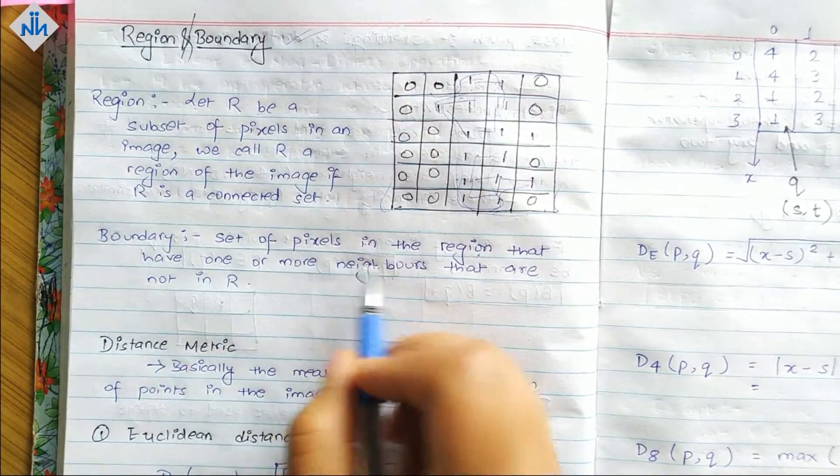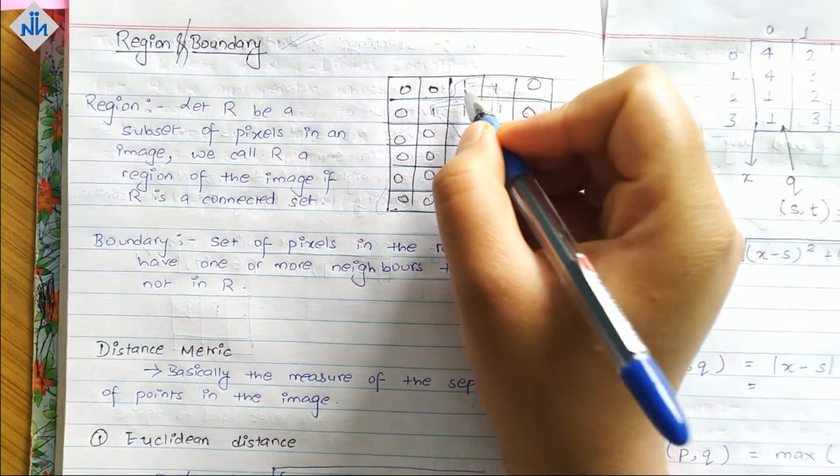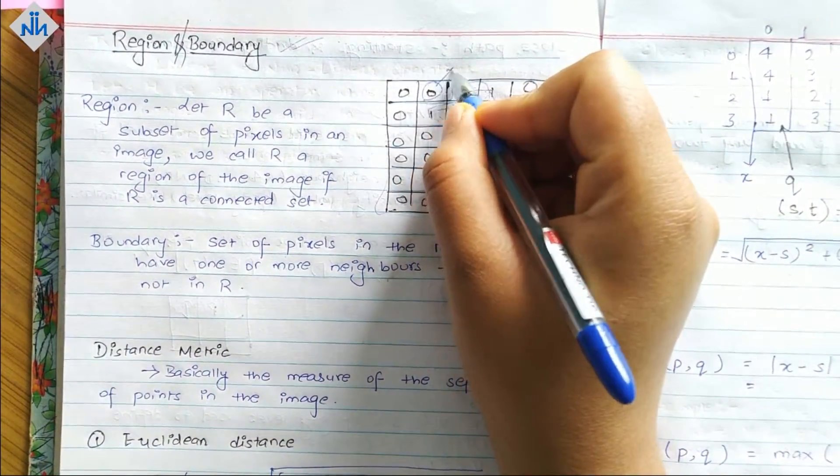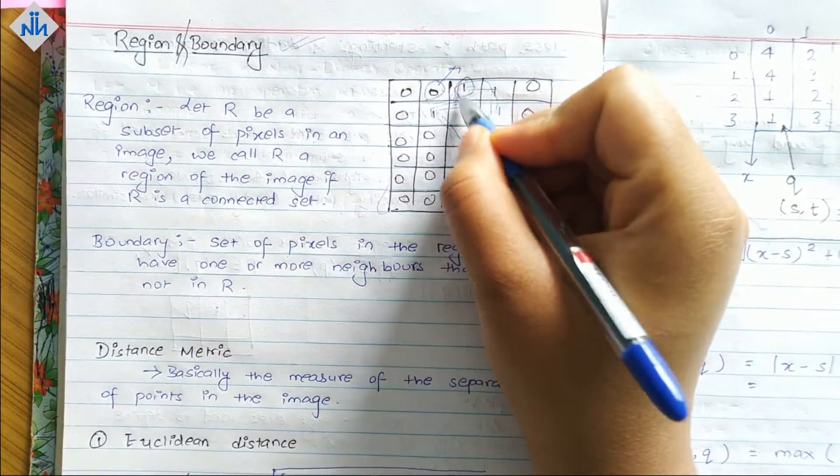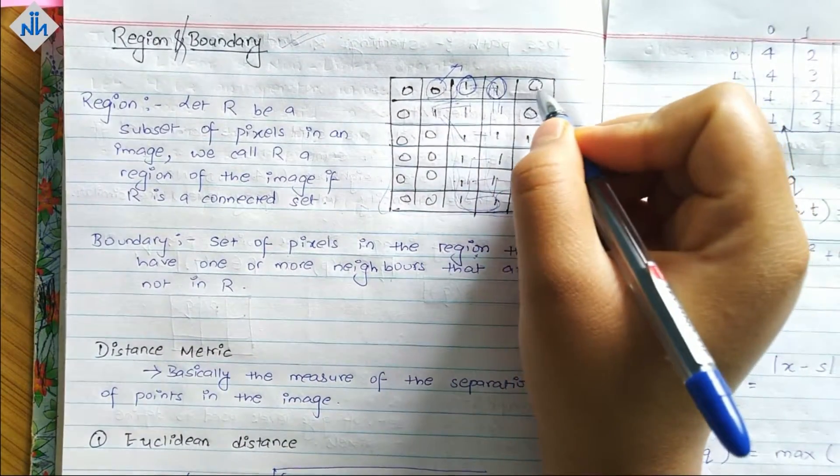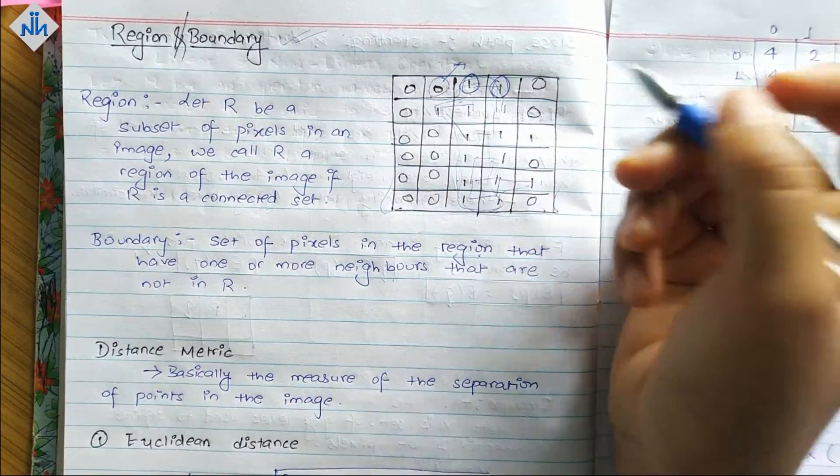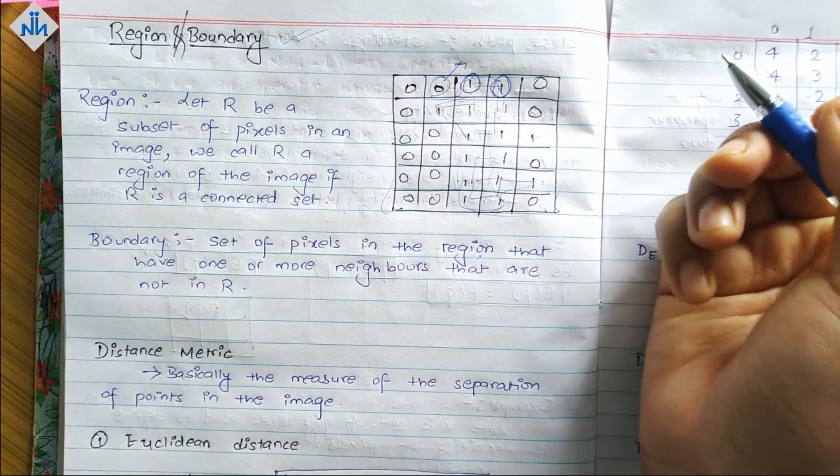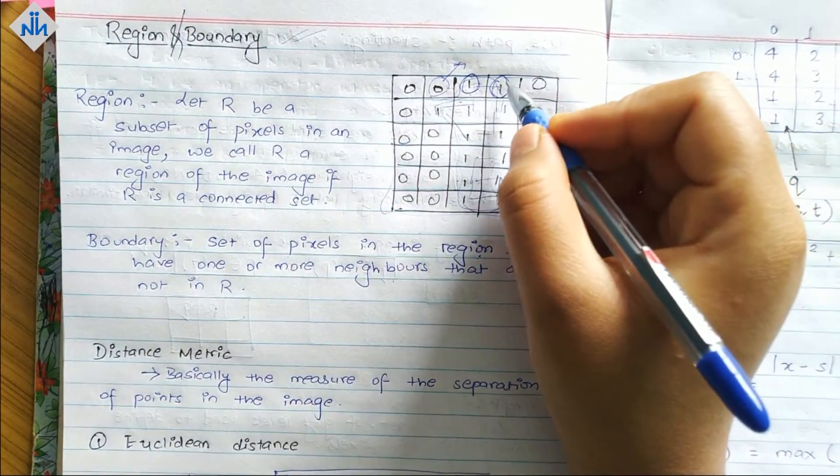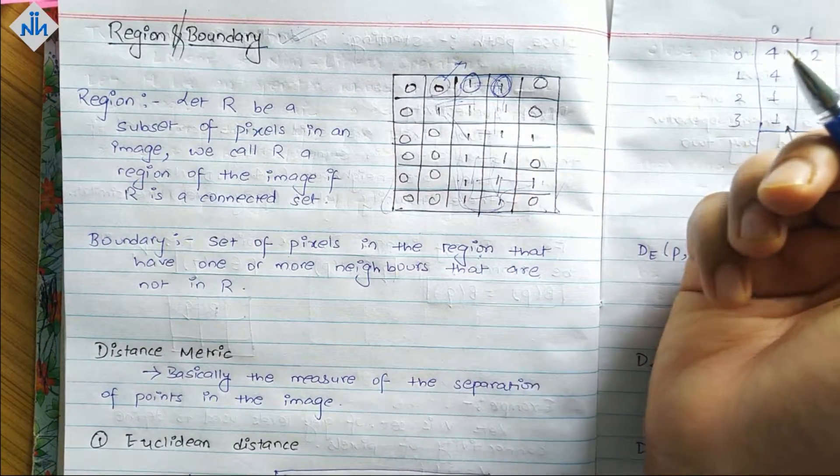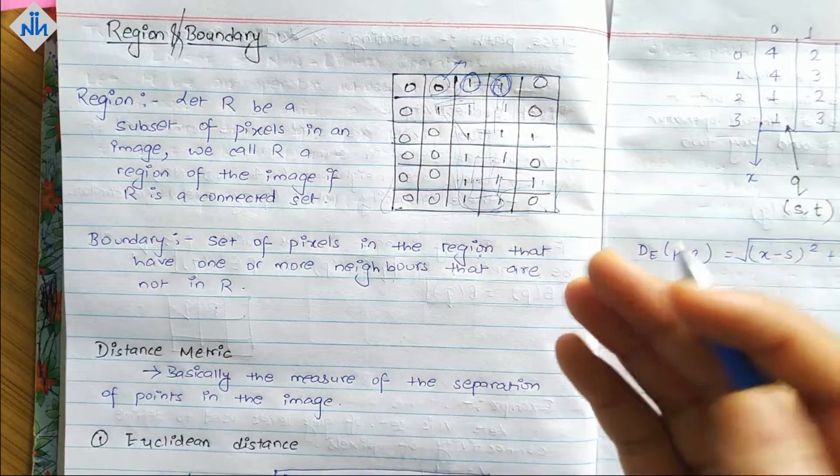For this pixel, we can see this is a neighbor that is not in R, so this is a boundary. For this pixel also, this is a neighbor that is not in R, so this is also a boundary pixel. Similarly, this, this, this, and even this one will be in our boundary.